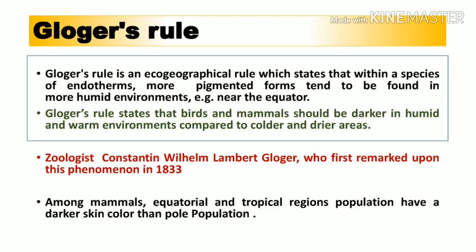Gloger's Rule is an eco-geographical rule which states that within a species of endotherms, more pigmented forms tend to be found in more humid conditions, that is, near the equator. Endotherms are organisms which maintain their body heat through metabolic processes. According to Gloger's Rule, organisms living near the equator will have a more pigmented form compared to those found near the polar area.